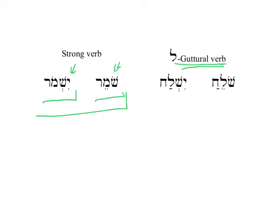Now we'll compare this to shin-lamed-chet, where the third root letter, or the lamed letter, is a strong guttural. The difference is there is no holom; rather, because of the nature of the chet, it demands to have a patach. So the holom is converted into a patach. And then in the case of the participle, sholeach, we need to have the furtive patach to get into an ayin or a chet when it's the last letter.